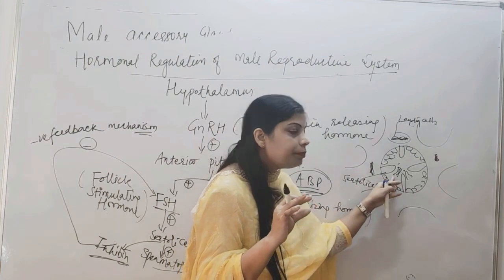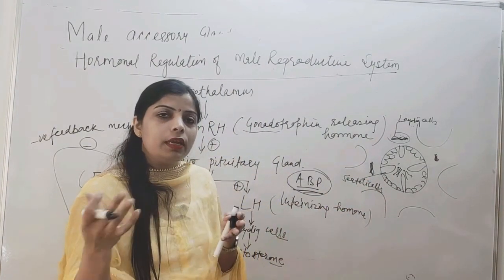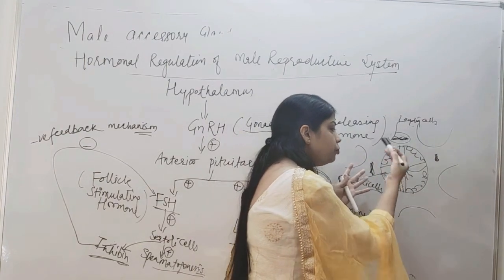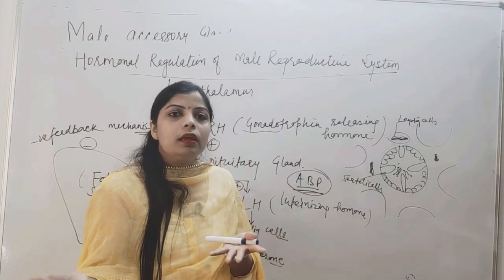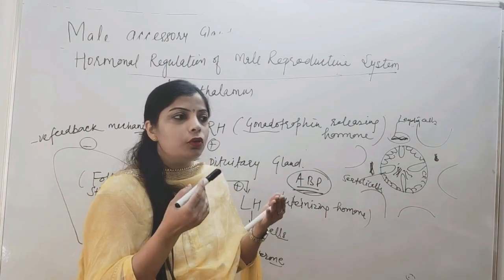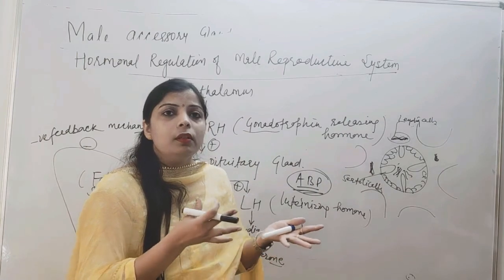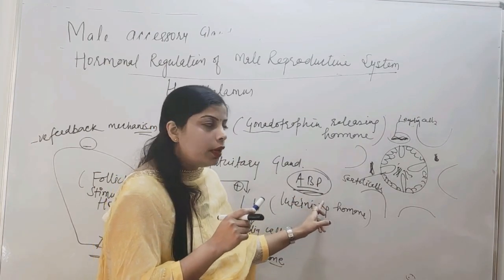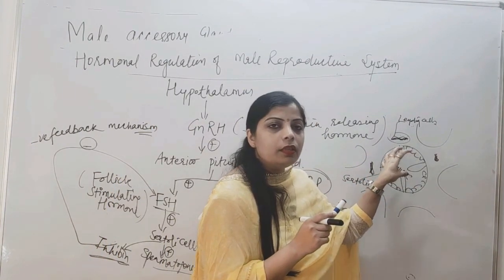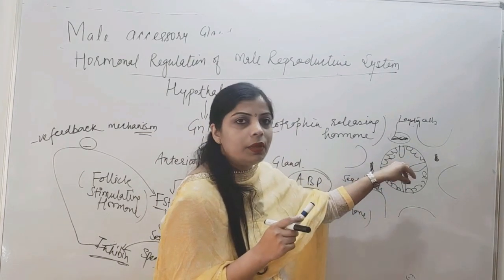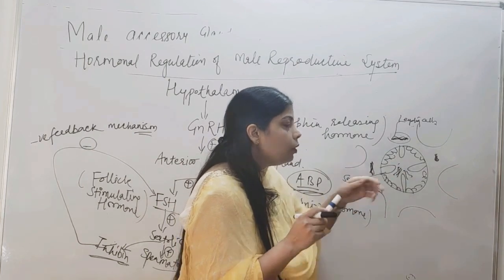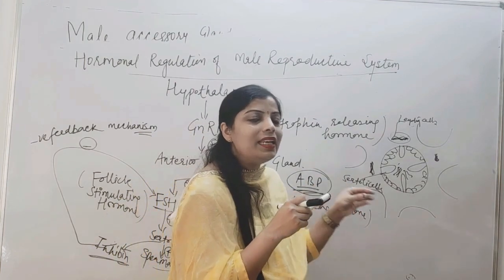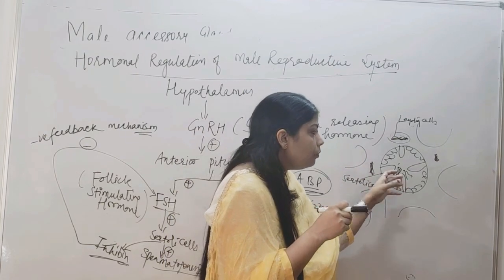The increased concentration of testosterone inside the seminiferous tubules, facilitated by androgen binding protein, also acts on secondary sex characters and helps in maintaining the male reproductive system. During spermiogenesis, the head parts of the developing sperms are embedded in the Sertoli cells. The seminiferous tubules release the mature sperms when required.